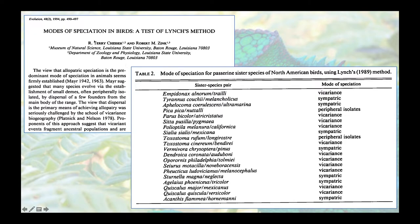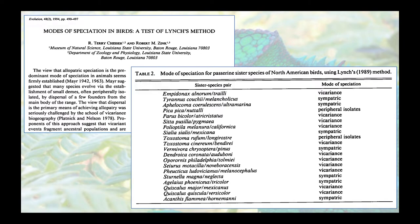A paper by Terry Chesser and Bob Zink from 1994 used a method proposed by Lynch. Reviewing a bunch of sister species pairs across North America, Chesser and Zink found quite a dominant signal of either vicariance, which is geographic speciation, or peripheral isolates, which is also a form of geographic speciation. They found relatively little evidence of sympatric speciation, and many of us would argue that even those weren't really examples of sympatric speciation.